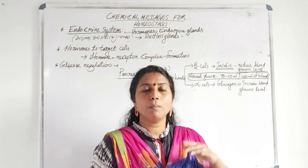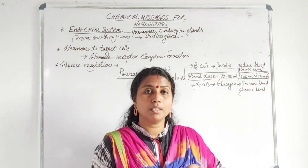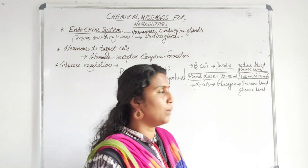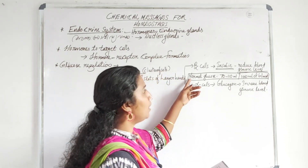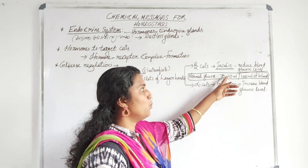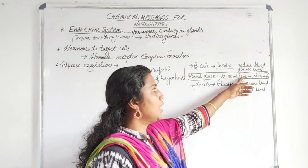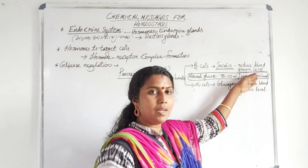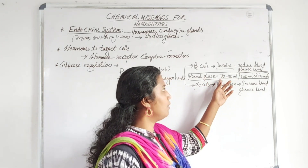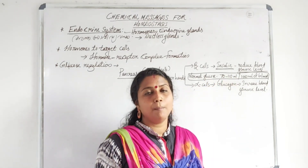The normal blood glucose level is 70 to 180 mg.